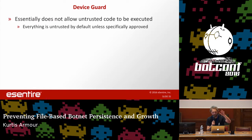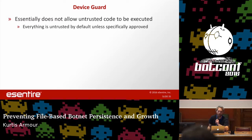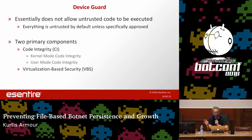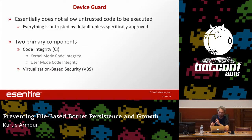DeviceGuard does not allow untrusted code to execute — everything is untrusted by default. It has two primary components: kernel mode code integrity, which protects the kernel from running unsigned drivers, and user mode code integrity, which enforces code integrity security on binaries, PowerShell scripts, WSH scripts, and MSIs. Virtualization Based Security (VBS) is the system that protects Device Guard settings from being changed while it is running.